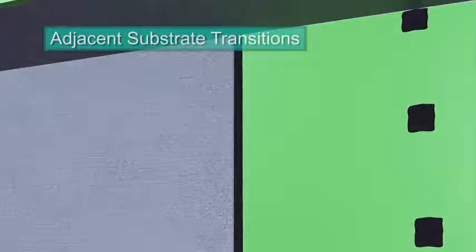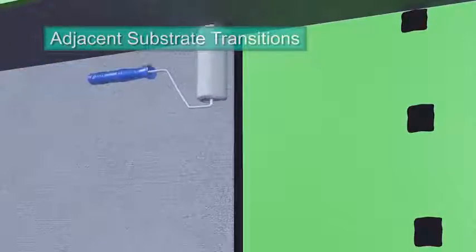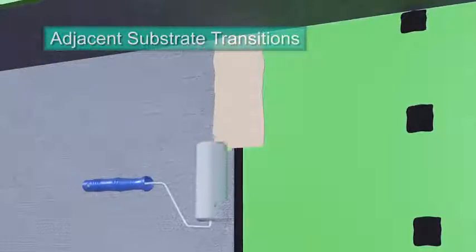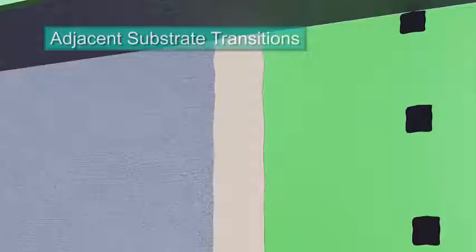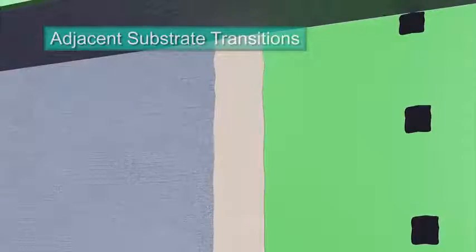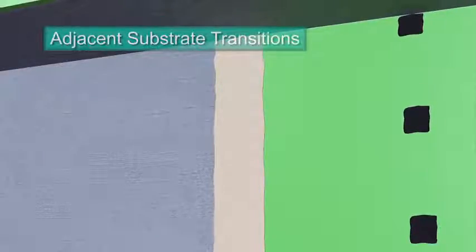Using a roller or sprayer, apply the ExoAir 230 fluid membrane to the adjacent substrate, over the sealant and onto the face of the panel. Finish applying the ExoAir 230 fluid membrane to the remaining adjacent substrate.